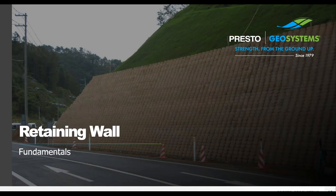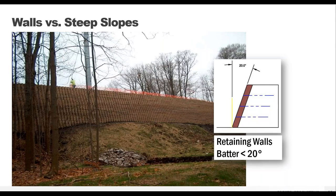Now let's talk about the fundamentals of retaining walls. Walls are defined as structures with a batter of less than 20 degrees; anything else is considered a steep slope and is protected differently. With walls, we think of project failure in terms of bearing capacity, overturning, and sliding. There's no limit to how tall we can go with geob retaining walls. This wall picture here is interesting due to its varying toe elevations, as well as its stability as a solution where the wall sits on a slope beneath the toe.